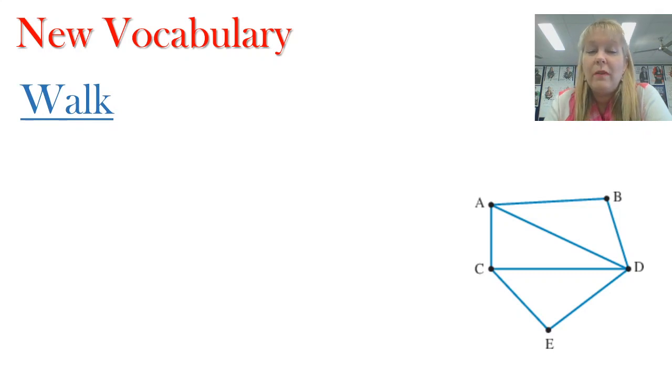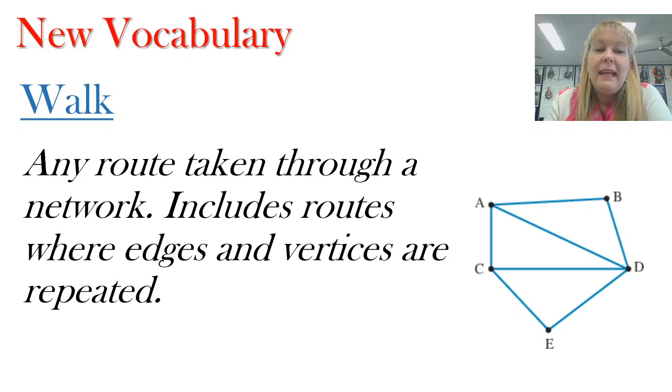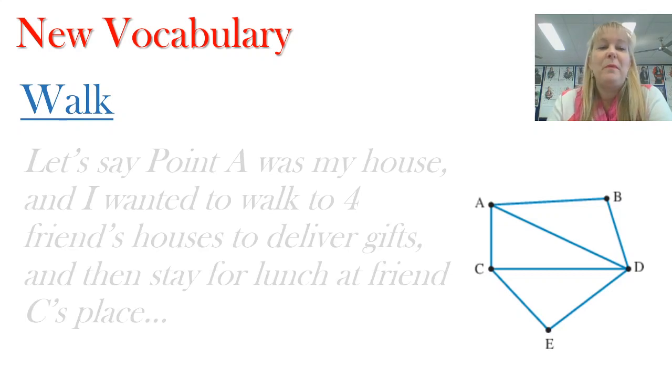So let's get started with some of that vocabulary. The first one I want to introduce you to is the word walk. Now you know what that is with your own two legs, but we're talking about a walk through a network. It's a route that we take through a network including any number of edges or vertices. You don't have to travel every edge in every vertex, or you could travel them all more than once. It really depends on what you want to do with a walk. Walks are very flexible and open.